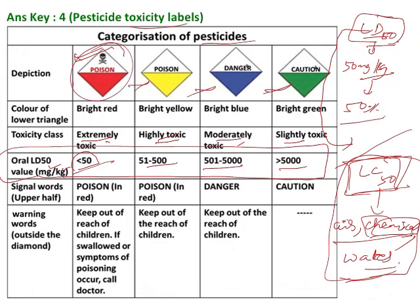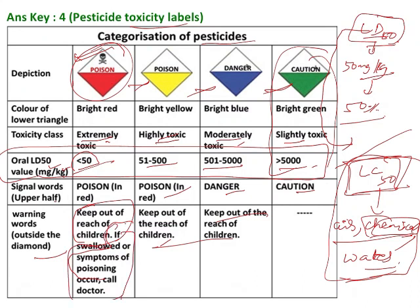The colors follow a danger scale: red, then yellow, blue, and green — green being the least dangerous. In the upper half of the label, the warning words are poison, danger, and caution, similar to what is written on medicines. Labels also include instructions like 'keep out of reach of children' and treatment details if accidentally swallowed, written on the back of the packet for doctors treating poisoning cases.